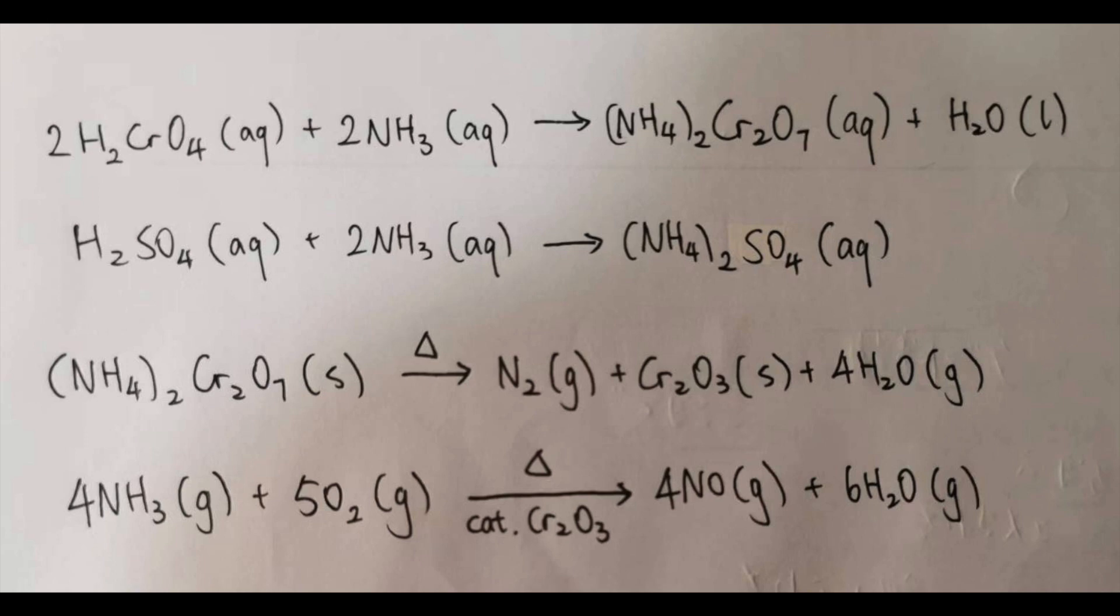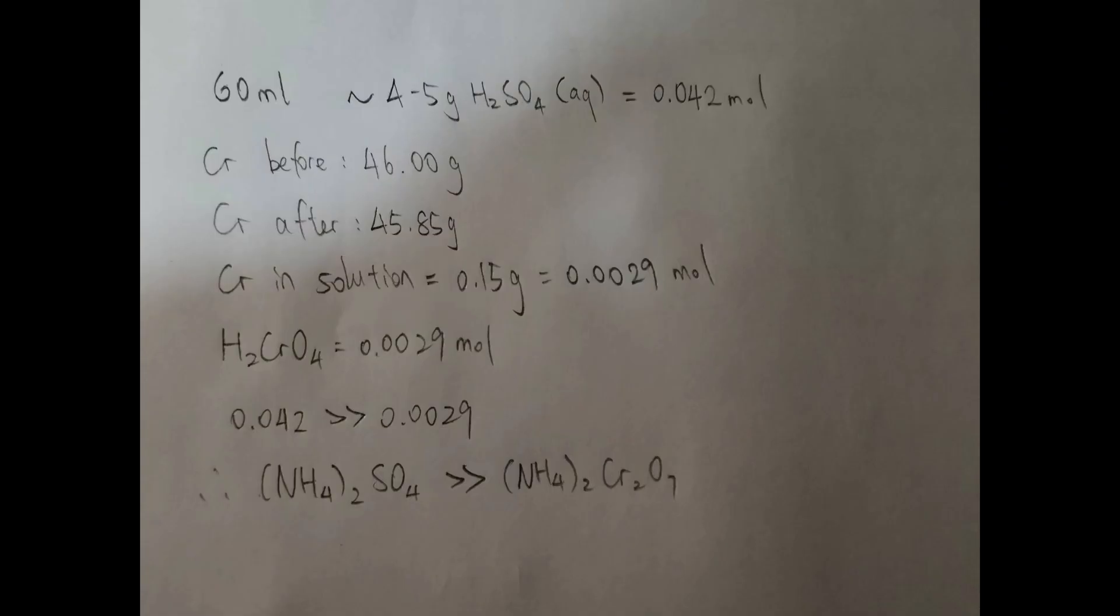I specifically wanted ammonium dichromate, which can decompose to chromium 3 oxide, a catalyst for nitric acid production. However, after the experiment, I did some calculations and found out that there are so much more ammonium sulfate than the dichromate, which means that we can't get anything pure from it.